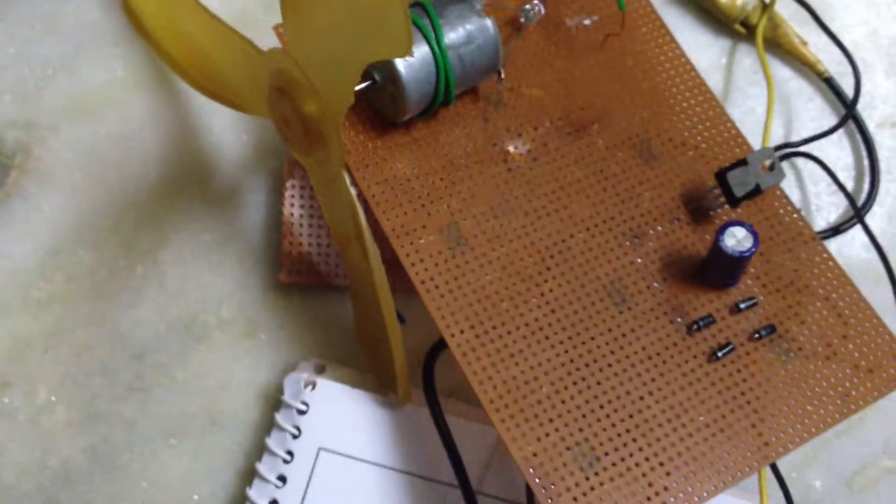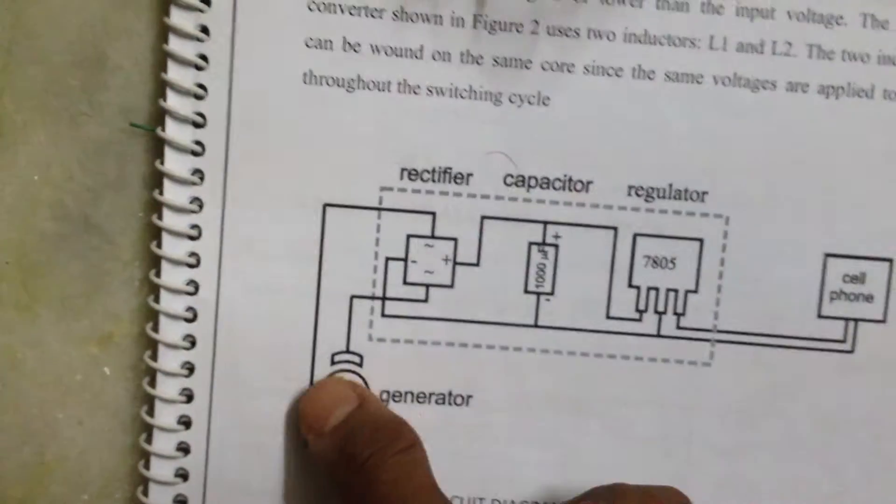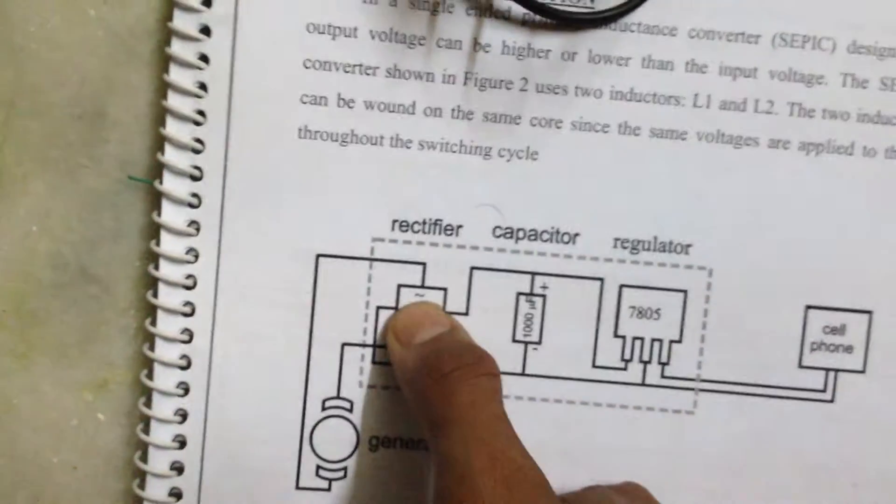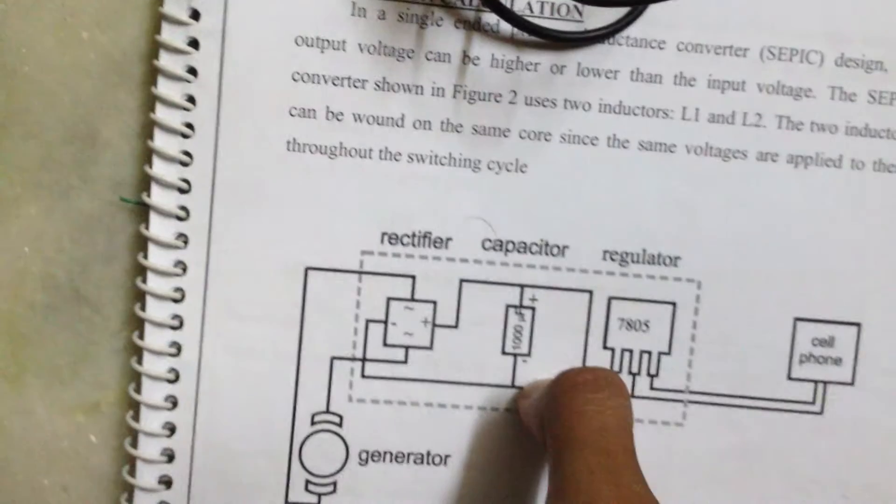The generator gives AC voltage. It will rectify it and gives DC voltage. The capacitor will filter it.